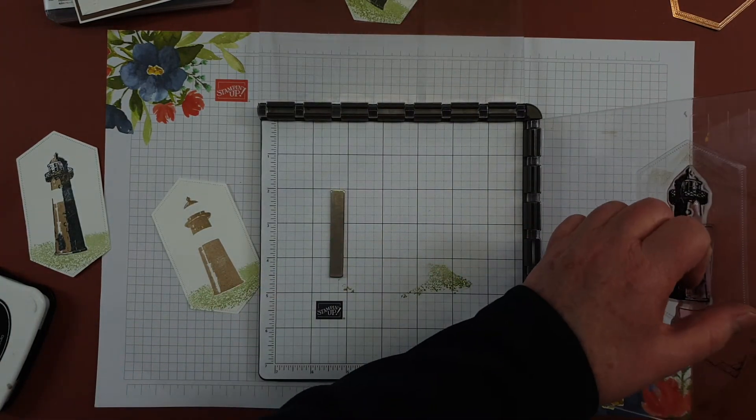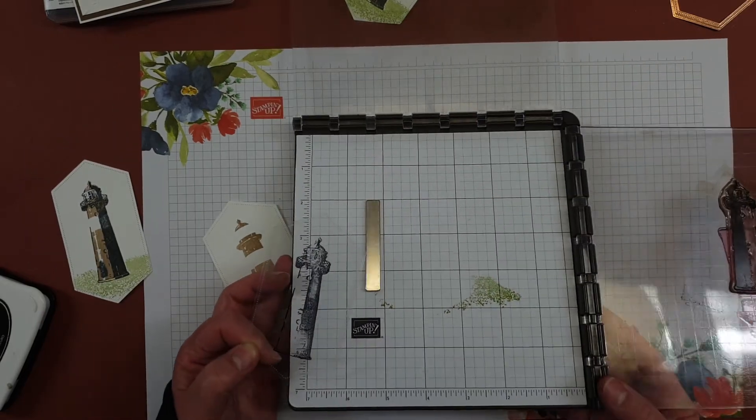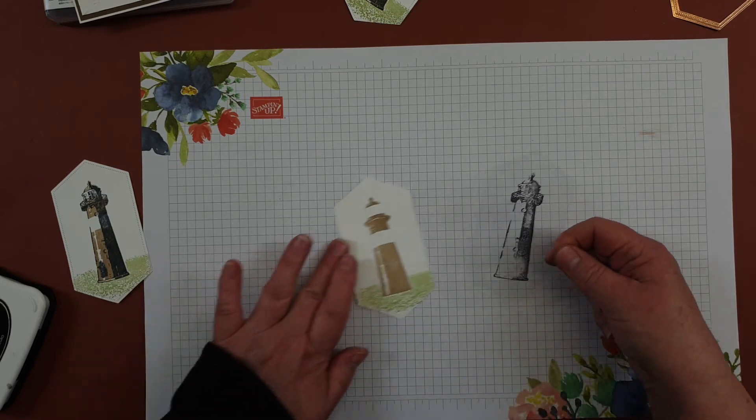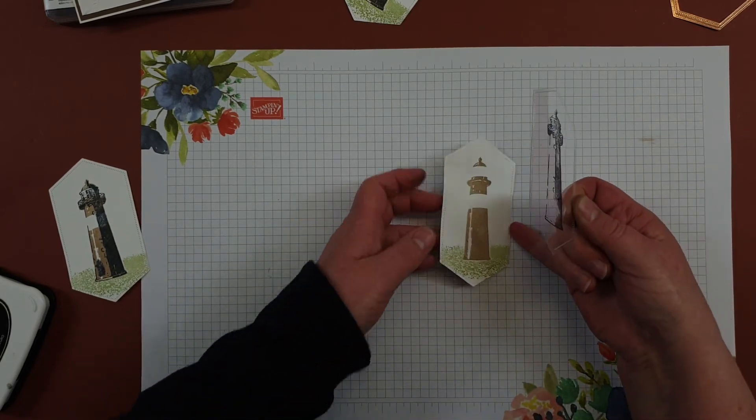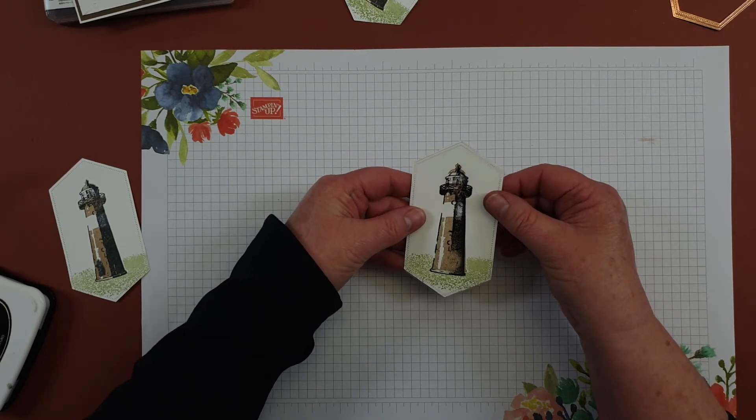It's a bit sticky so you might need to peel the window sheet back off your Stamparatus. And I've got my top layer then on here and I'm going to put it on.